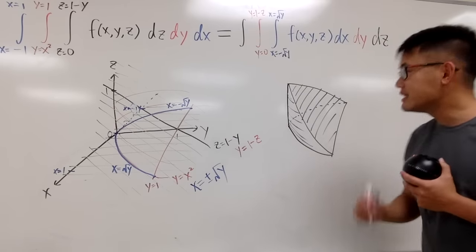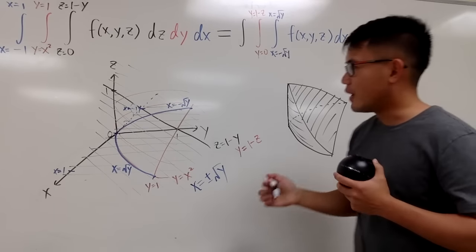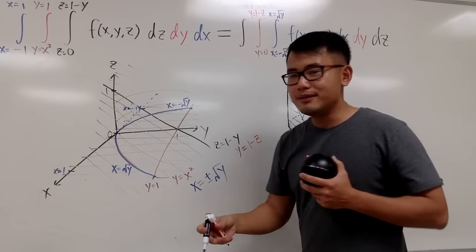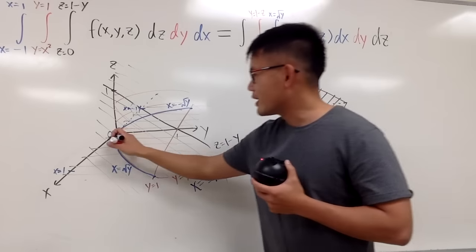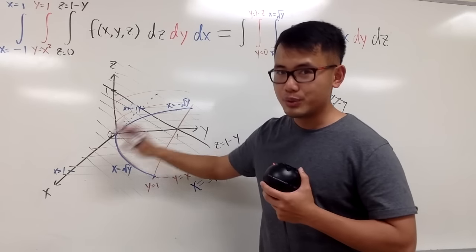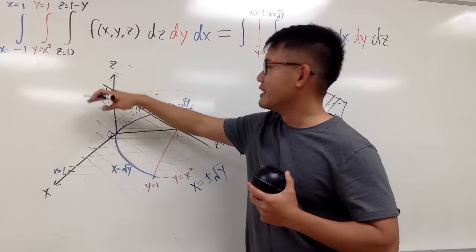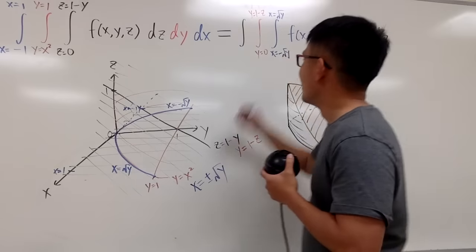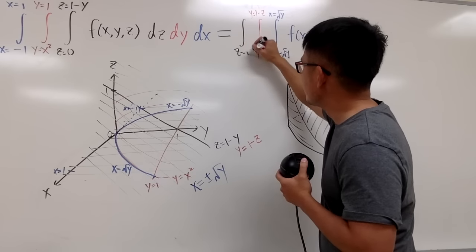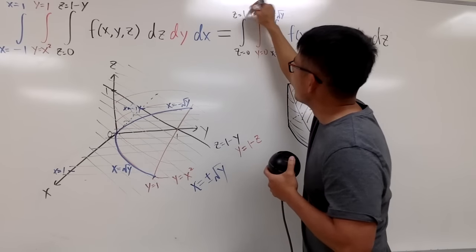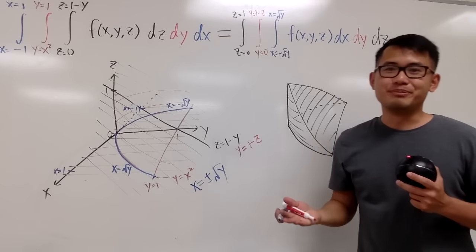Lastly, looking at the dz — the z values. From either picture, z equals 0 at the bottom and the height is 1. So z goes from 0 to 1.